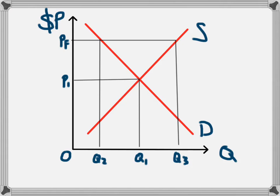And so what this gives us is an excess supply of the product of this amount here.